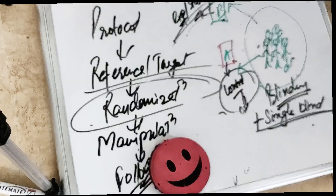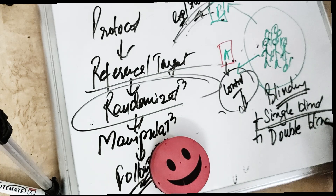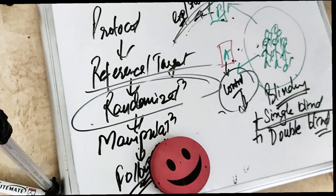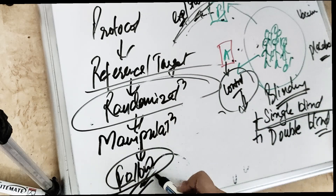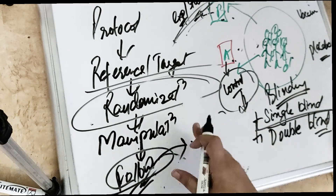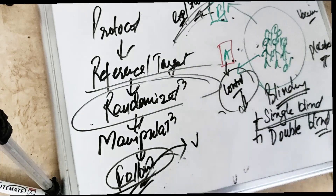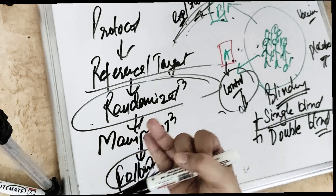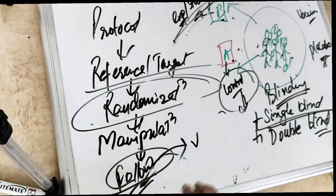Double blinding means the doctor who is giving the drug to both groups has no idea which one is the real vaccine and which one is the placebo. This ensures that the follow-up — whatever vitals, signs, or symptoms are recorded — is not biased. So double blinding is when both the investigator (doctor) and the participants don't know the allocation of the group.